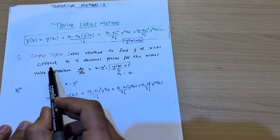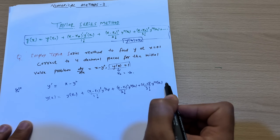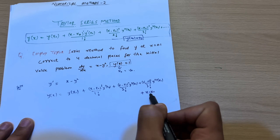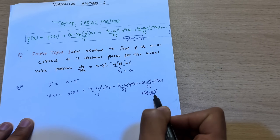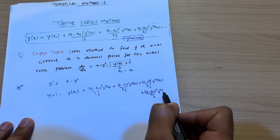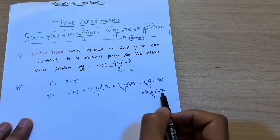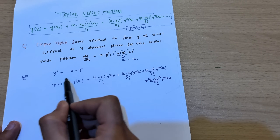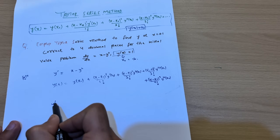Since the question asks correct to four decimal places, we also need one more term: (x − x₀)⁴/4! · y⁽⁴⁾(x₀). This means we have to differentiate the equation four times. So we now put down values from the given equation.